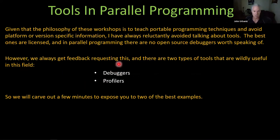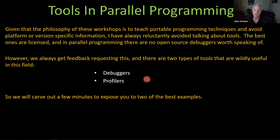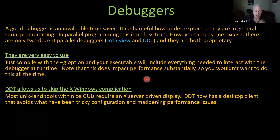The two classes of tools you want to use to help your programming are debuggers and profilers. This is not just true of parallel programming — it really should be true of serial programming too. People just don't use these great, wonderful, friendly tools and they waste so much time fighting with code. It used to be that debuggers were command-line based, but that's no longer true. These things are usually trivial to get up and going and they're GUI-based.